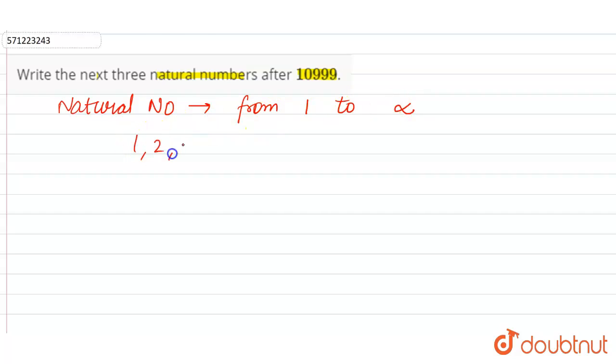For example, 1, 2, 3, 4, 5, 6, up to infinity. These all are the positive numbers and also called the natural numbers.